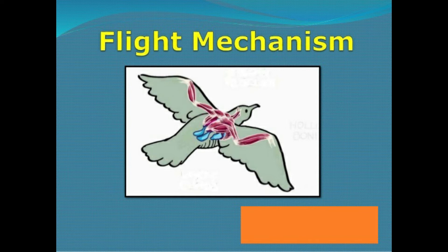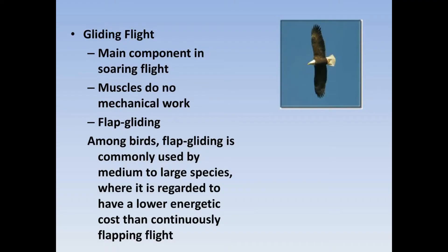A bird can fly either passively by gliding or actively by flapping its wings. In passive flight, when the bird glides, the wings act as an aerofoil. An aerofoil is any smooth surface which moves through the air at an angle to the air stream. The air flows over the wings in such a way that the bird is given lift. The amount of lift depends upon the angle at which the wing is held relative to the air stream.